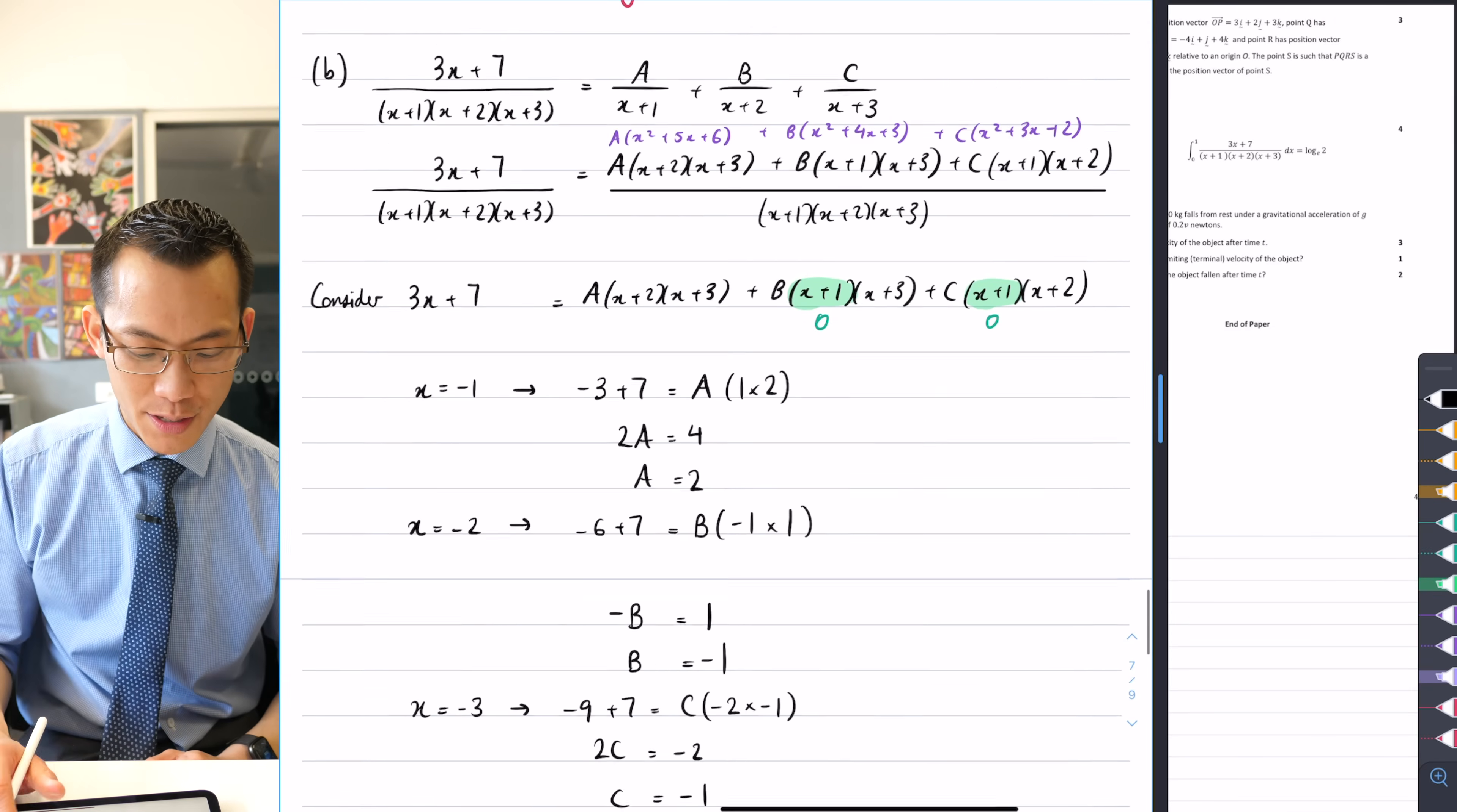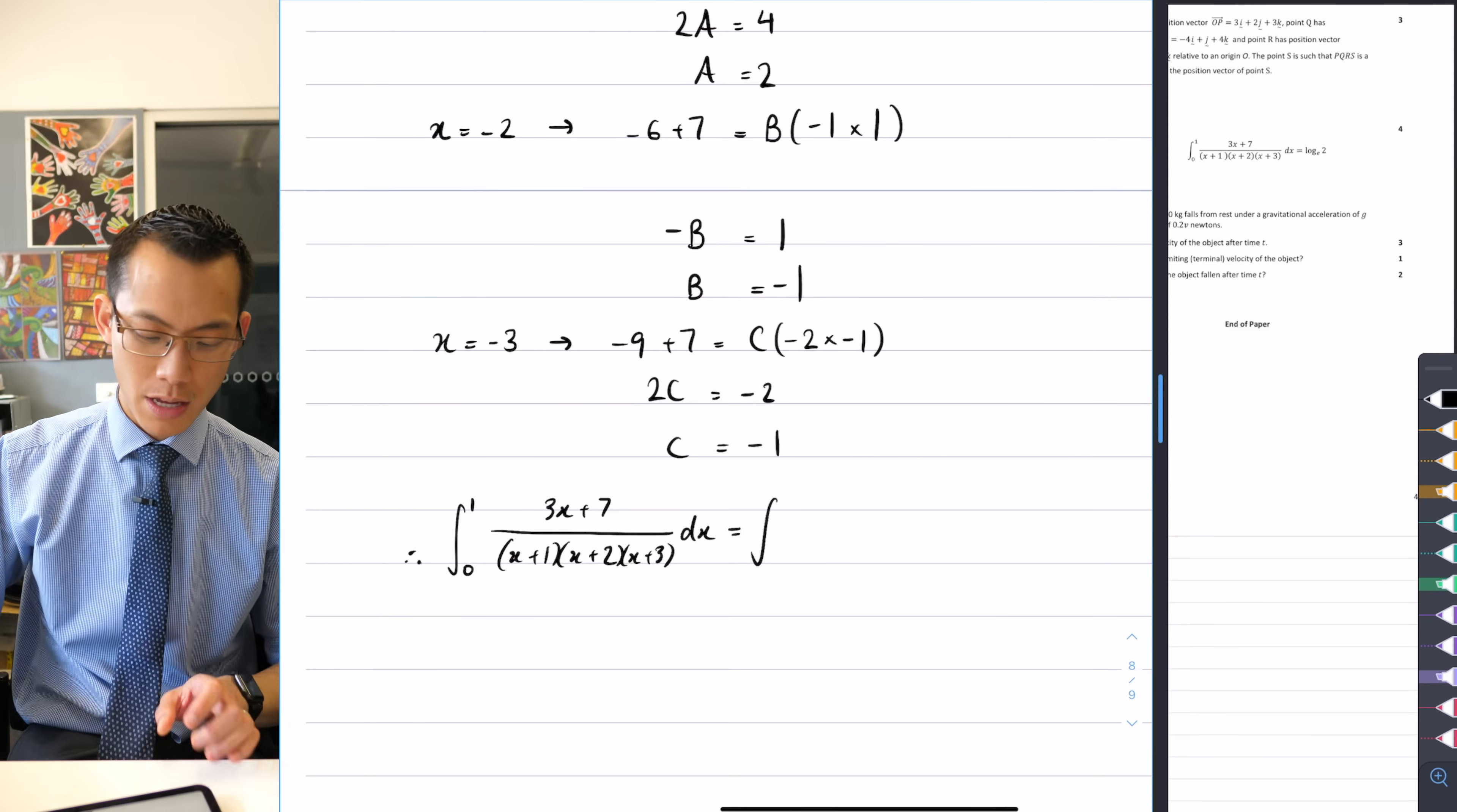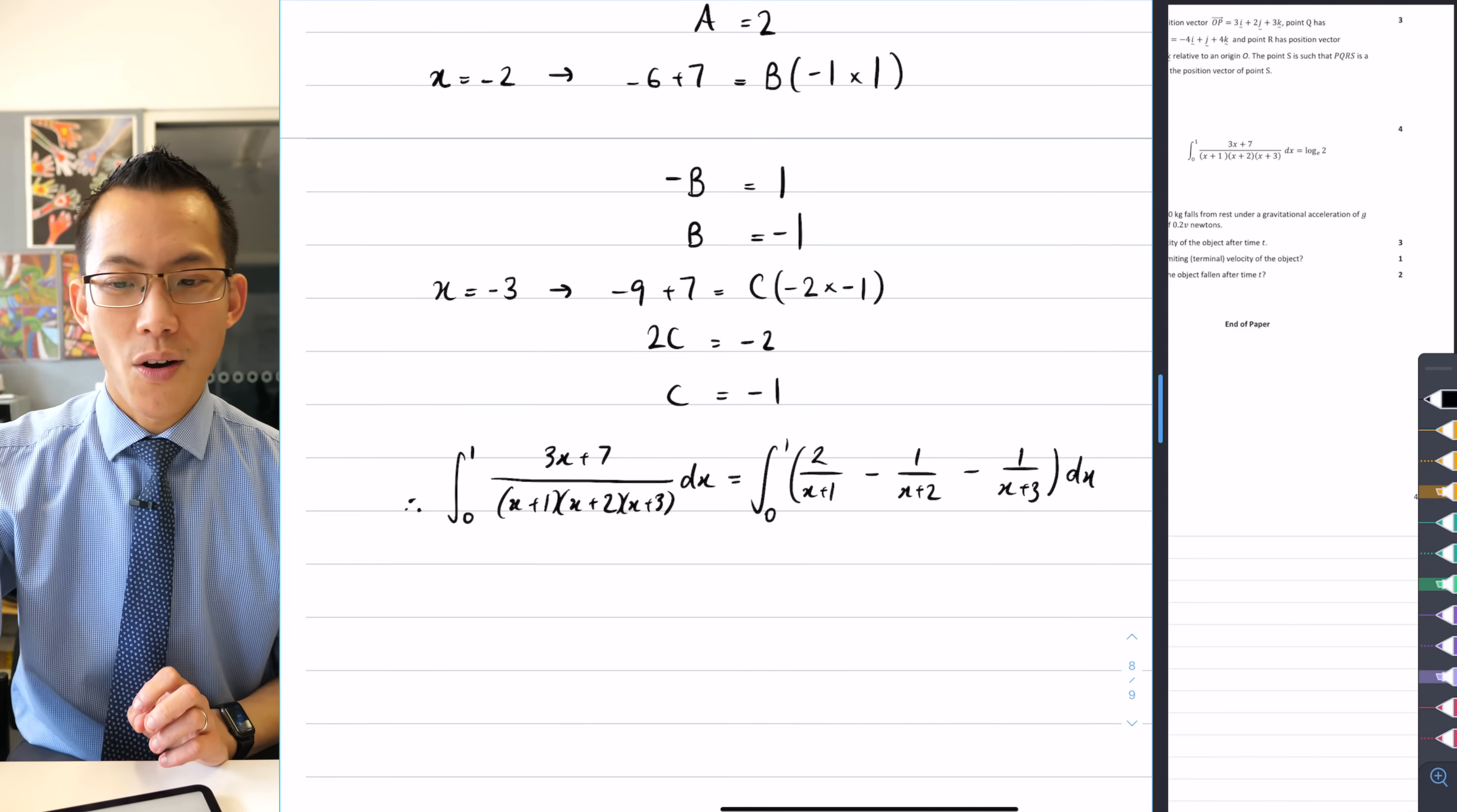I'm going to proceed to the integration. I found what A and B and C are. So therefore, I can say, therefore, the integral from zero to one of 3x plus 7, all divided by (x+1)(x+2)(x+3), with respect to x. I can now break that into those three integrals that I saw before. So zero to one, our A was 2. So that's 2/(x+1). I'm going to have minus 1/(x+2), minus 1/(x+3). And then all of that is with respect to x.